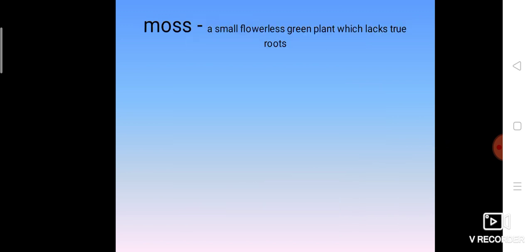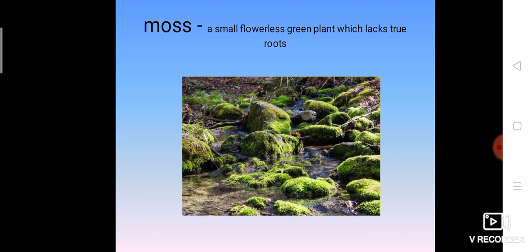The last but not the least word is moss. Moss means a small, flowerless, green plant which lacks true roots. It is a plant but it does not have any roots and it does not show any flowers. We can see this on the rocks, stones, and on the trees.